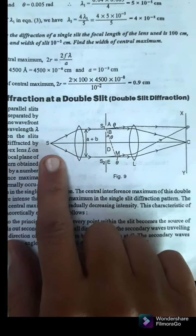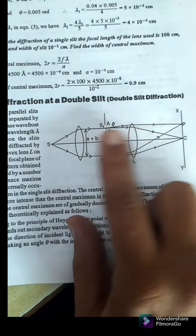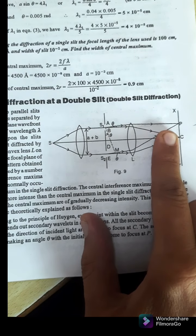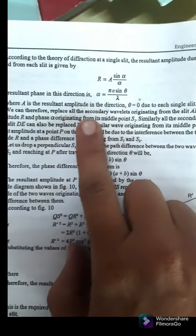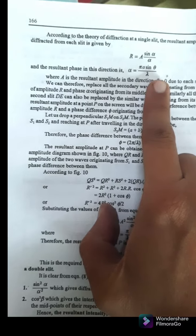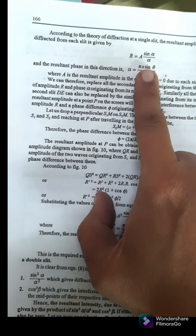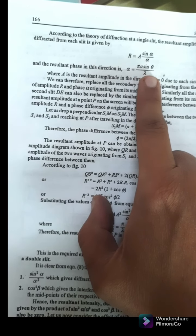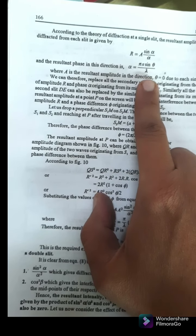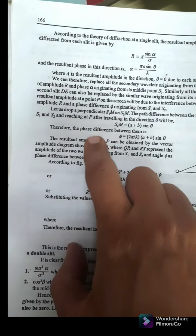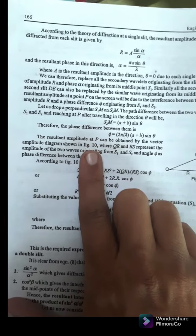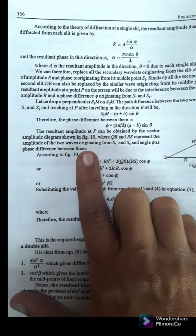When light comes, the path difference creates the resultant amplitude which is R equals A sin alpha upon alpha, where alpha equals pi A sin theta upon lambda, where A is the amplitude in the direction theta due to each slit.